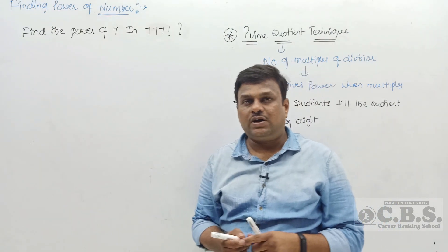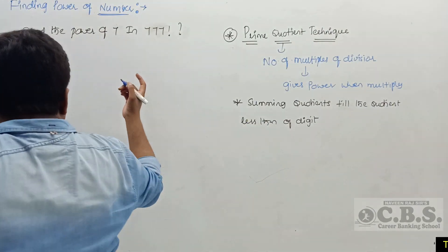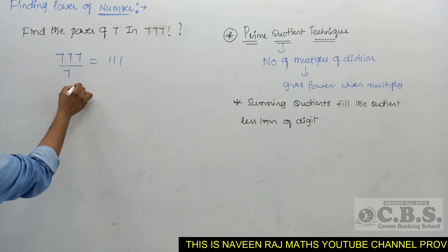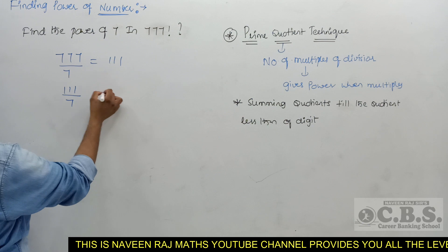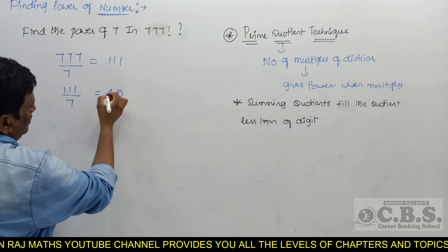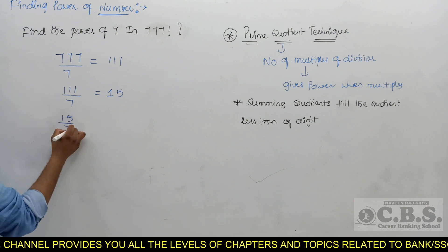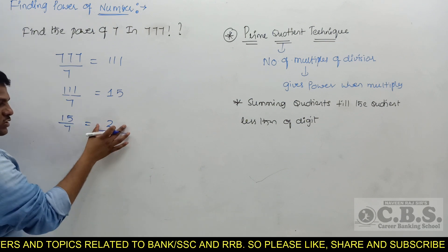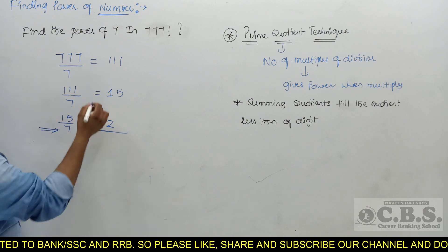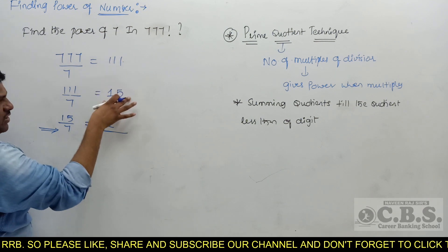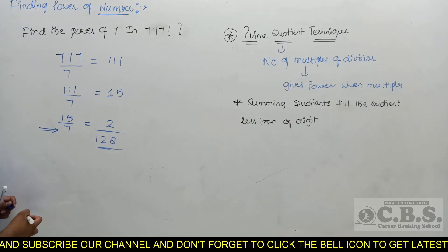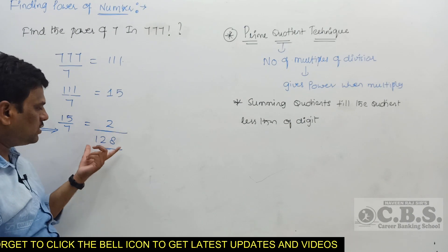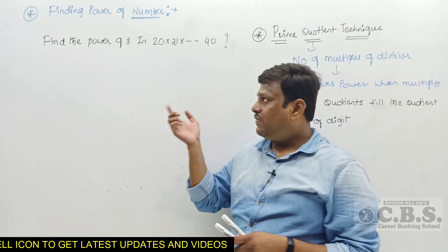Find the power of 7 in 777!. 777 ÷ 7 = quotient 111; 111 ÷ 7 = quotient 15 (since 7 × 15 = 105); 15 ÷ 7 = quotient 2. Since 2 is less than 7, we stop. Summing: 111 + 15 + 2 = 128. So the power of 7 in 777! is 128.